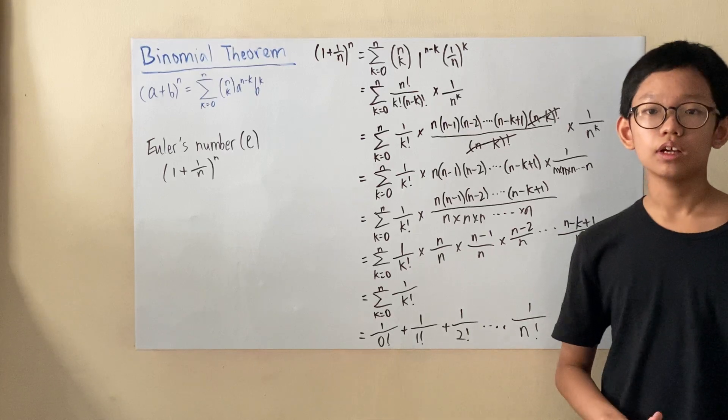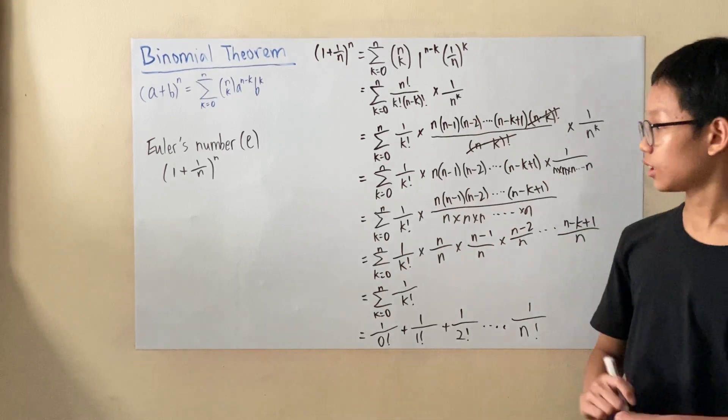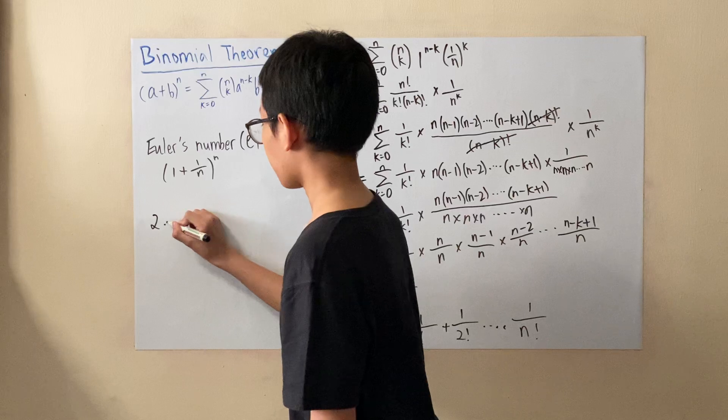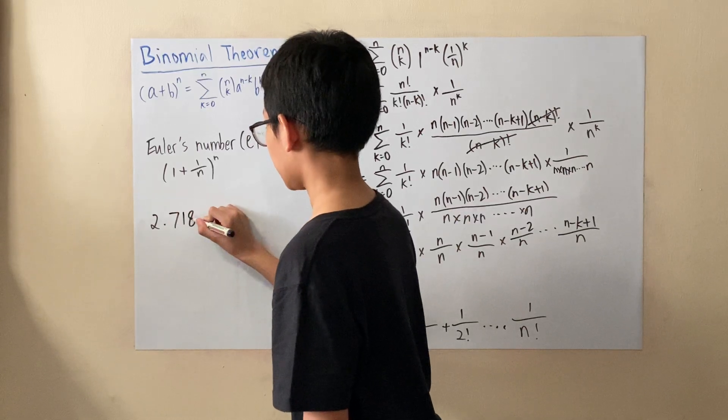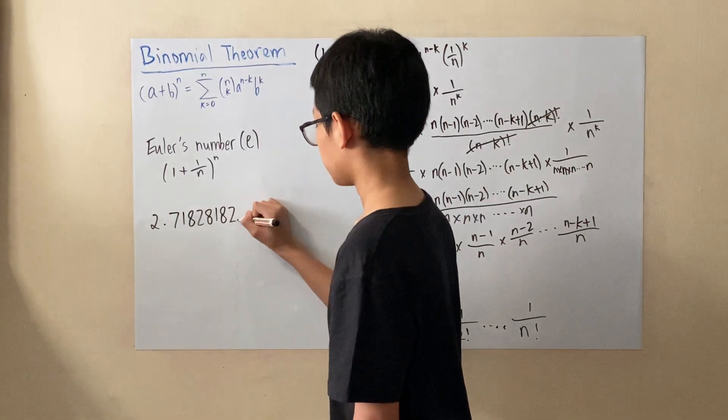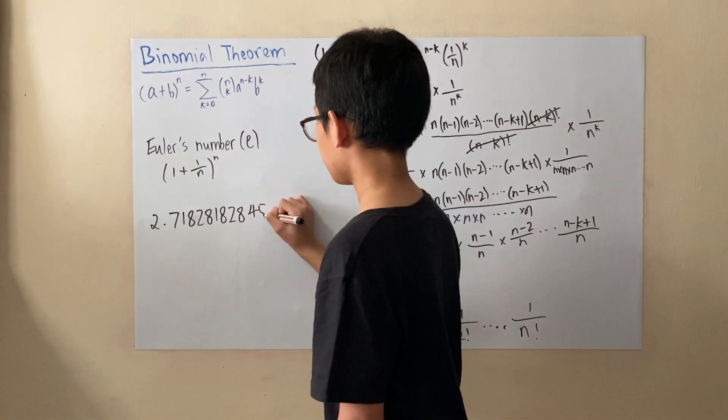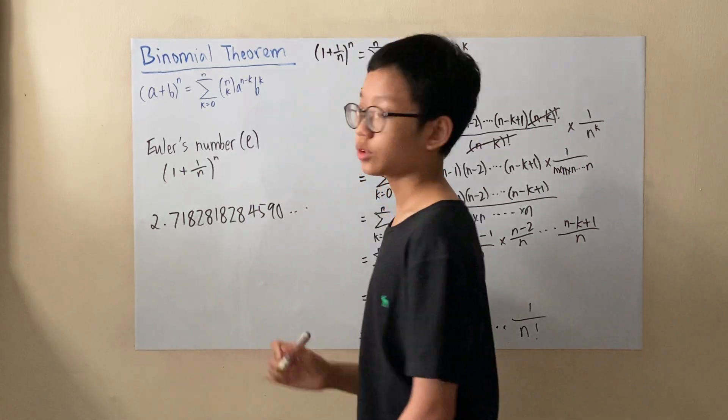However, right now, Euler's number has been calculated to be around 2.7182818284590 and so on.